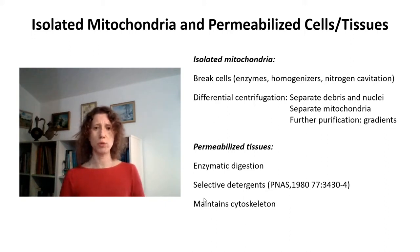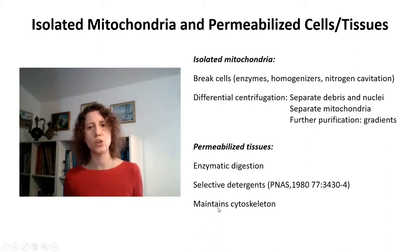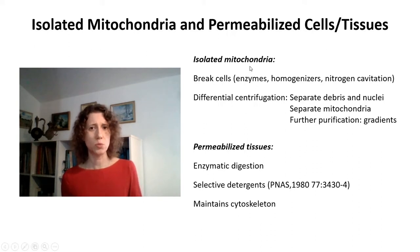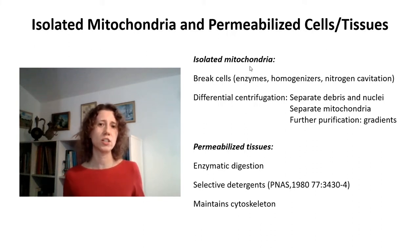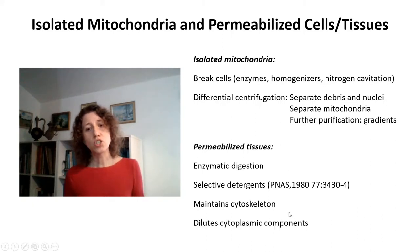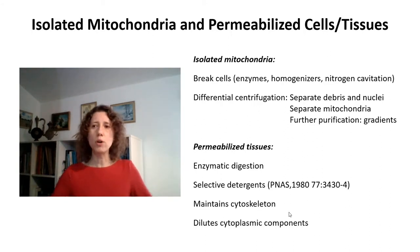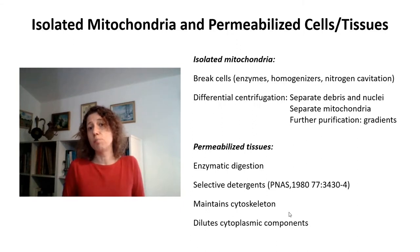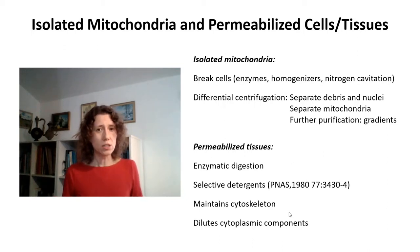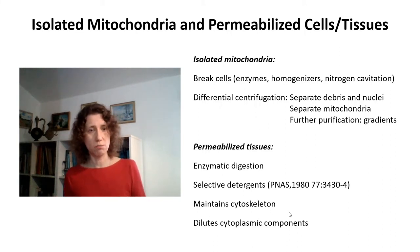An advantage of permeabilized tissue experiments is that the cytoskeleton is maintained — this has been clearly shown with digitonin permeabilization — so mitochondrial architecture is more conserved compared to isolated mitochondria studies. Also, when you permeabilize the cytoplasmic membrane, you infinitely dilute the cytoplasmic soluble components, so all water-soluble enzymes and metabolic intermediates in the cytosol are effectively eliminated from the experiment.